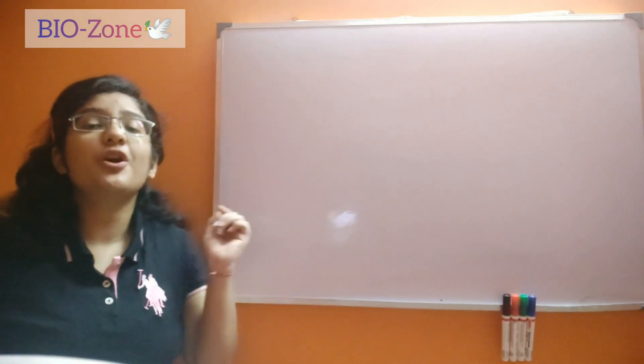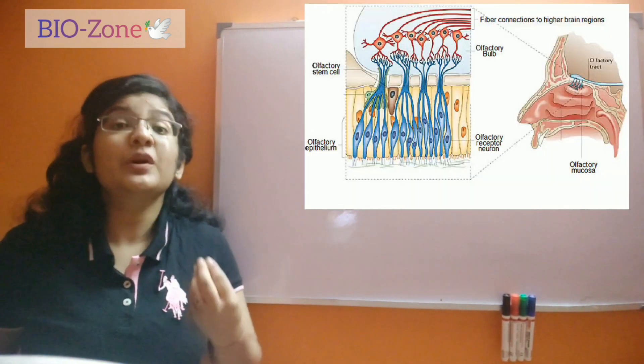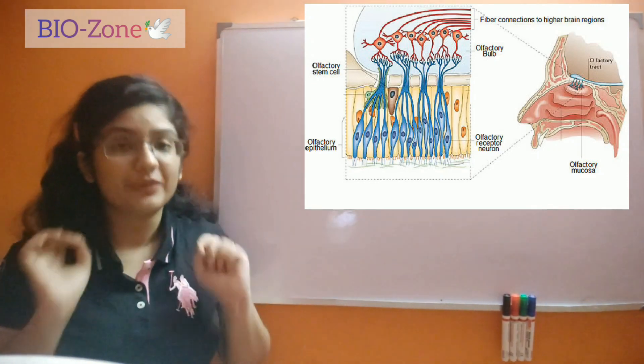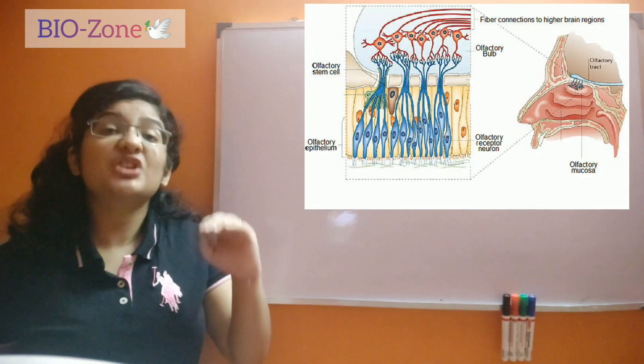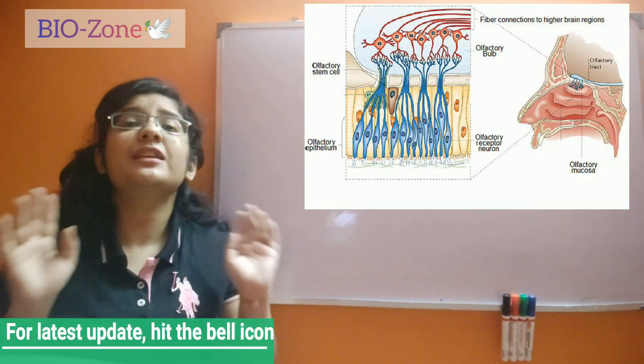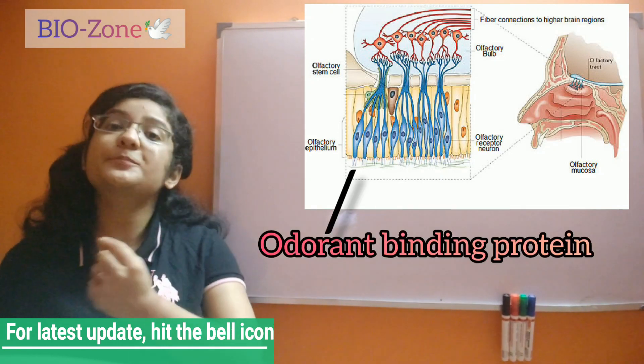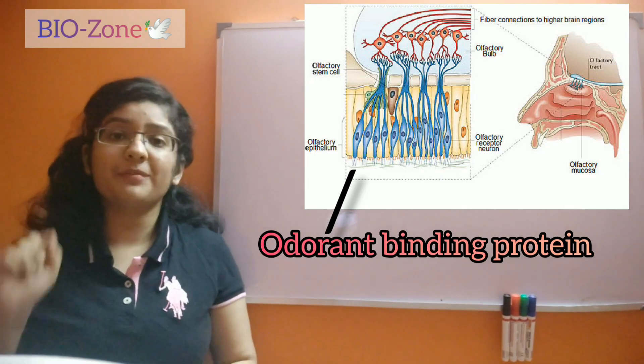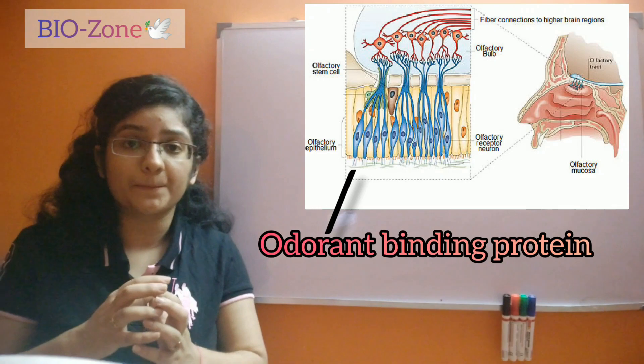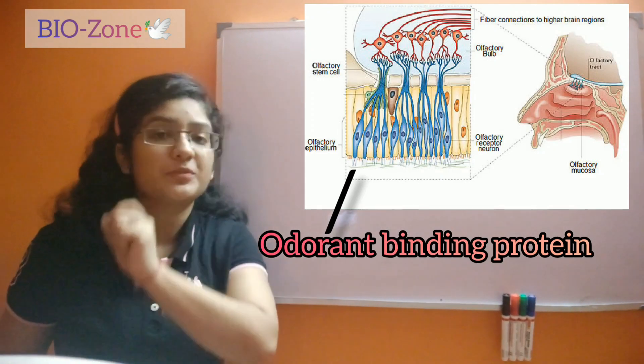So what happens during this time? When you sense or encounter a smell, it will go to the olfactory mucus membrane which rests just beneath our receptor cells. Here we have lots and lots of mucus where they have odorant binding proteins. These odorant binding proteins bind with the odorant molecule and concentrate them.